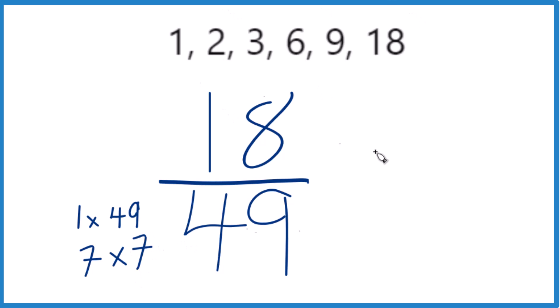So what is the common factor between 18 and 49? 1, that's a common factor. So really 1 is the greatest common factor.